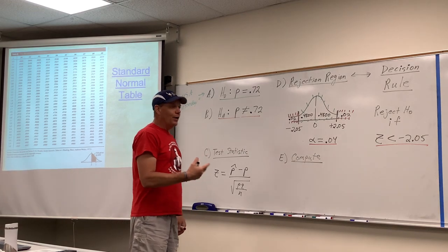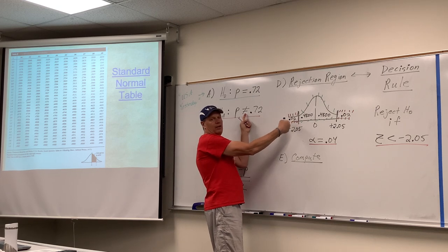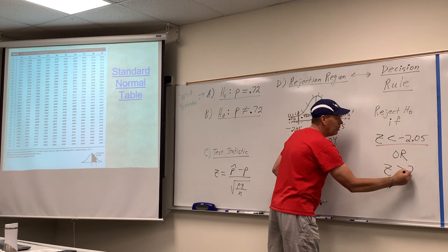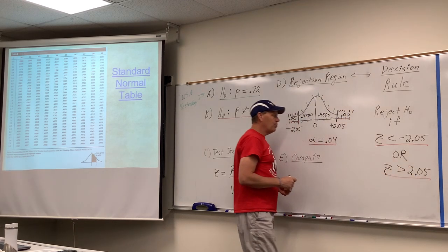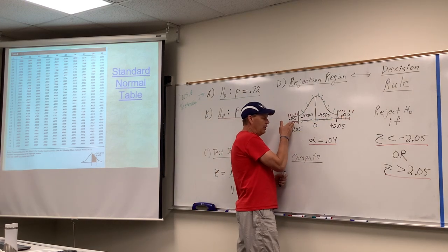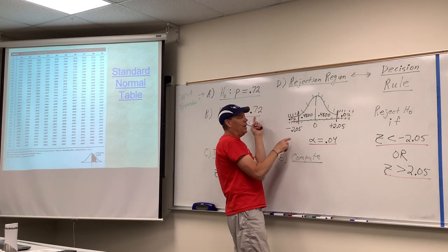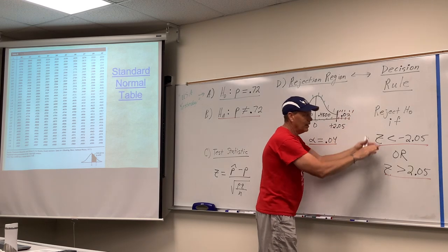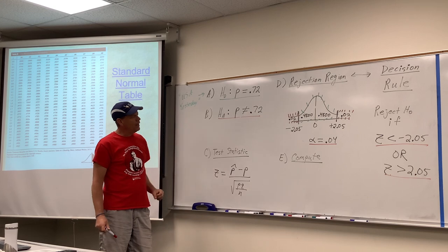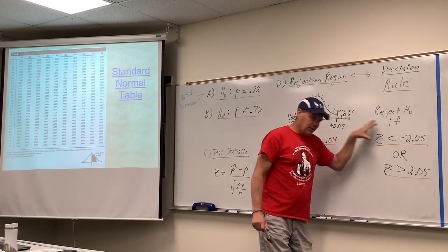Also, if we get a Z-score greater than positive 2.05, that's the upper rejection region — another potential rejection. Because of the not-equals alternative, there are two possibilities. The lower tail would indicate the percentage is significantly lower than claimed; the upper tail would indicate it's significantly higher. Either way, we reject.